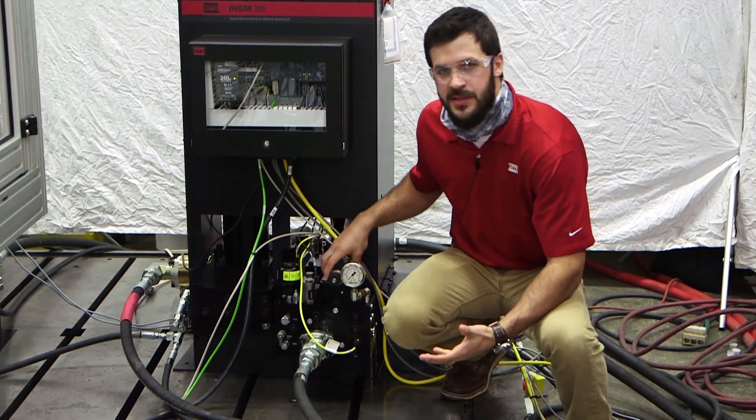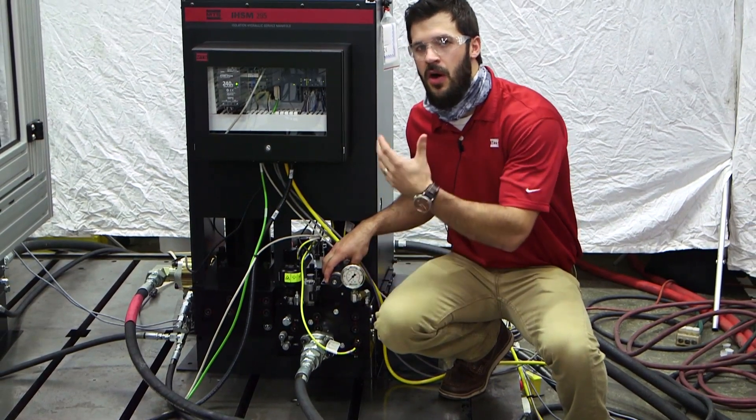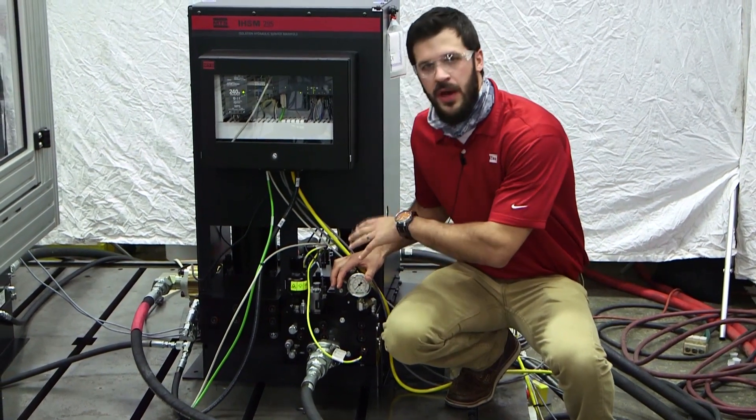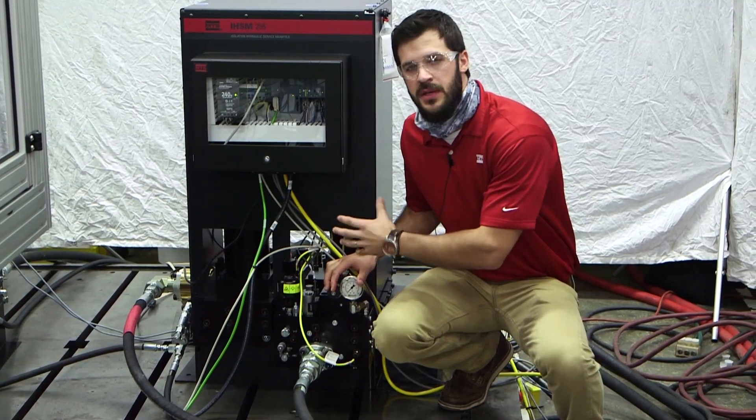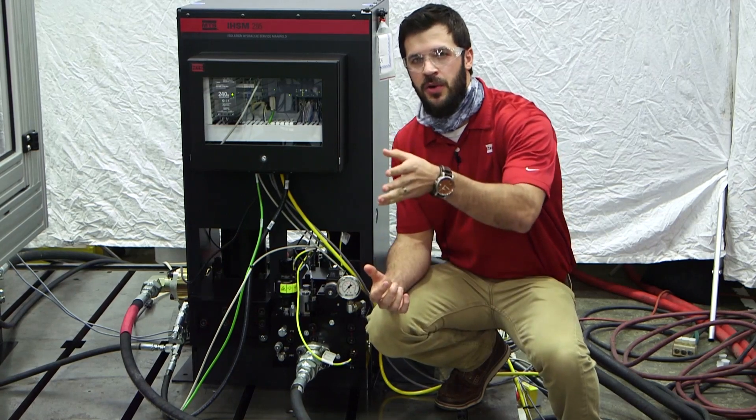So here we have our first isolation valve, which is monitored by a pressure switch. This is all monitored through Safeguard. After the isolation valve opens, there's a series of low pressure and high pressure modes that we go through on our controller.